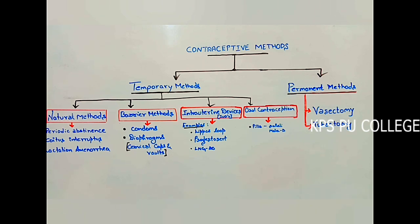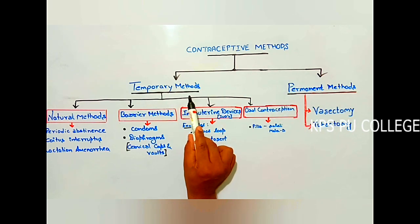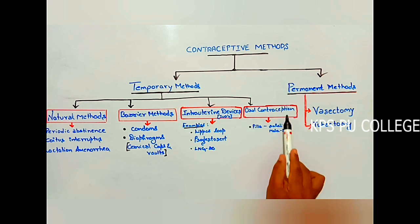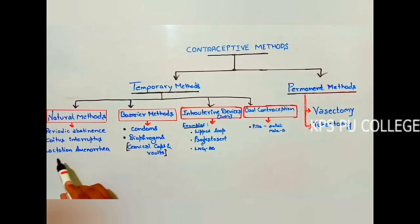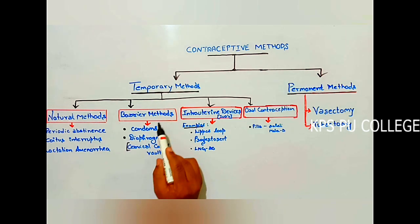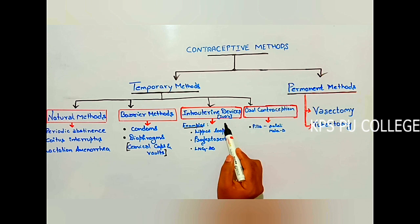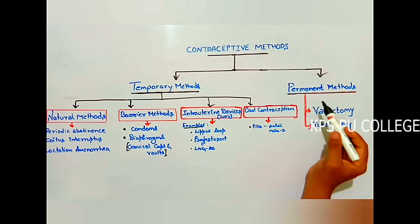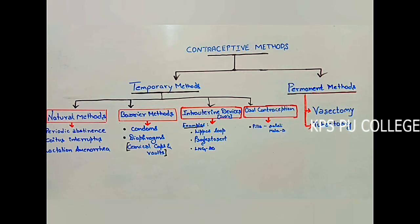Let us learn the classification of contraceptive methods. Contraceptive methods are classified into two types: temporary method and permanent method. Temporary methods are again classified into four types: natural method, barrier method, IUD (intrauterine devices), and oral contraception. Permanent methods include vasectomy and tubectomy.